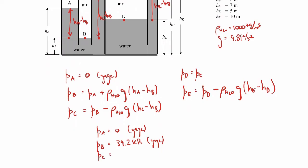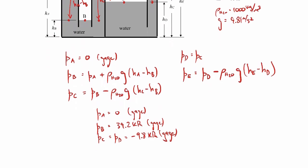PC, which is also the same as PD, will be minus 9.8 kilopascals gauge. So it's actually below atmospheric pressure. And then PE is even further below atmospheric pressure. It's minus 58.9 kilopascals gauge. So those are the resulting pressures at the various locations.